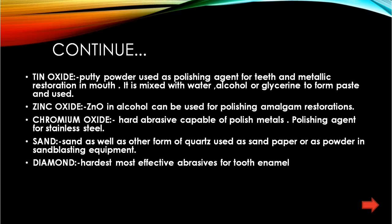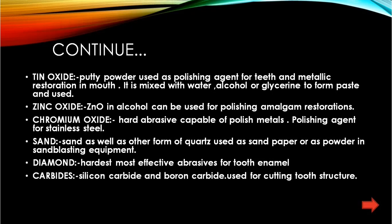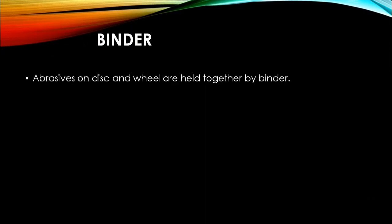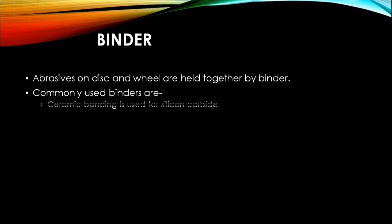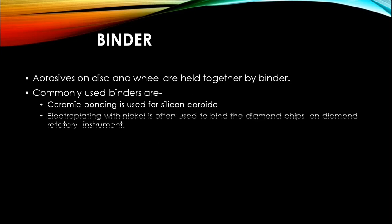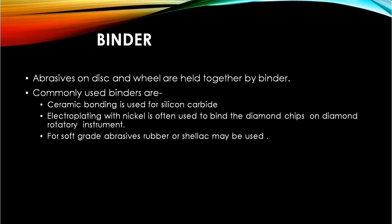Diamond is the hardest abrasive; carbides and zirconium silicates are other examples. Binders — abrasives on a disc or wheel are adhered to each other by a substance known as a binder. For example, ceramic bonding is done for silicon carbide. Electroplating with nickel is used to bind diamond chips on diamond rotary instruments. For soft grade abrasives, rubber or shellac may be used.